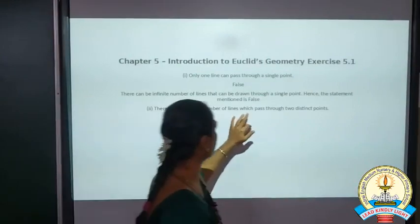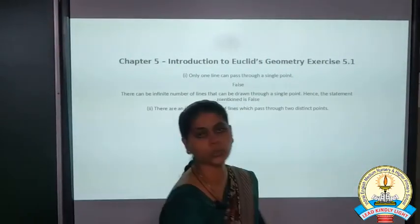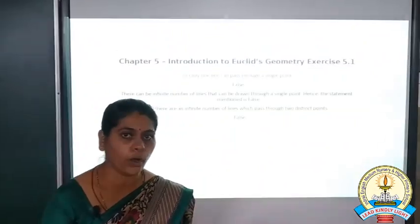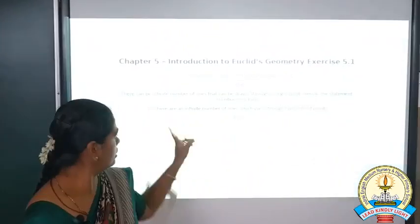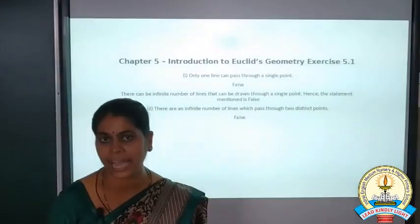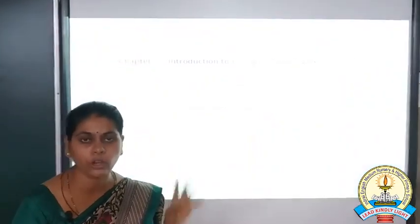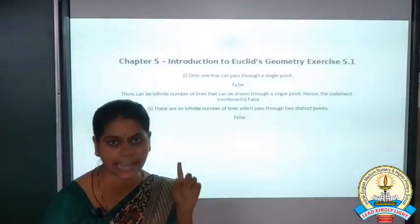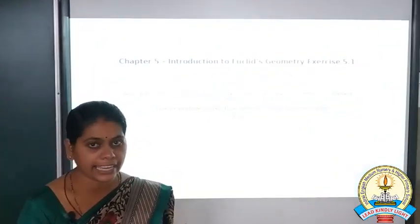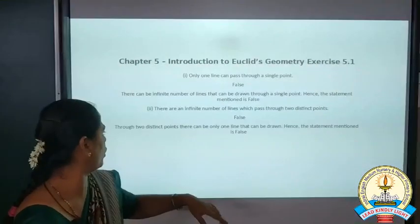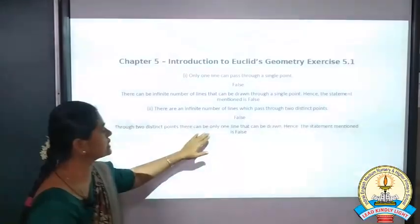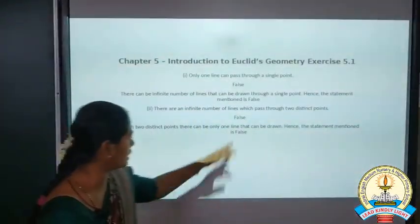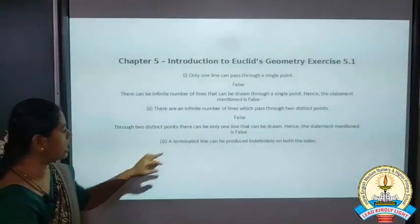Now go to the second statement: there are infinite number of lines which pass through two distinct points. Through two points you can draw an infinite number of lines. That is also false, because through two points you can draw only one line segment. One line segment requires two points, so through two distinct points there can be only one line segment drawn. So the statement is false.